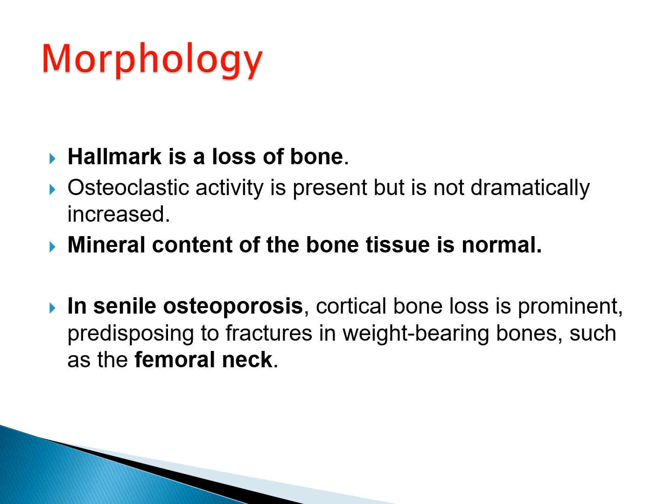Regarding the morphology of osteoporotic bone, the hallmark is loss of bone. We lose the bone protein and the bone matrix. The mineral content is normal — what is affected is the bone protein. Bone production by osteoblasts is markedly decreased, and osteoclastic activity is also increased. In senile osteoporosis, cortical bone loss is prominent, such as in the femoral neck, predisposing to fractures.